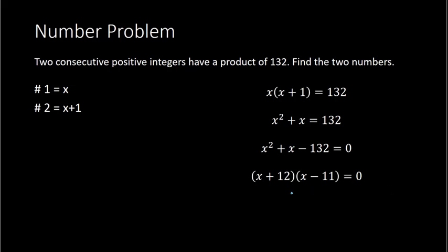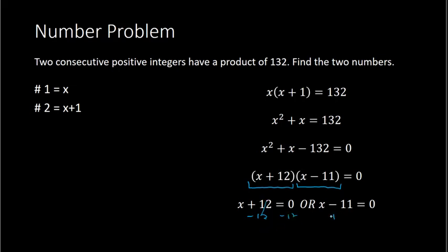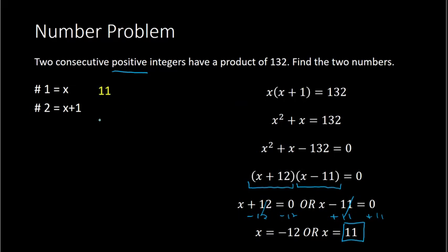We see that factored form typed up right here. Now I can set each part equal to 0: either x plus 12 equals 0, or x minus 11 equals 0. Solving the first gives x equals negative 12, and the second gives x equals positive 11. Looking back at the original problem, we want two consecutive positive integers, so we choose positive 11. So x equals 11, and the next number is 11 plus 1, which is 12. These are the two consecutive positive integers with a product of 132.